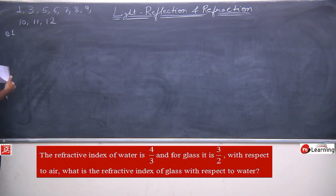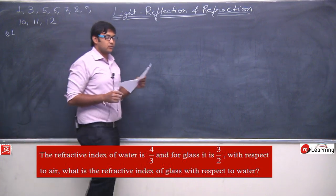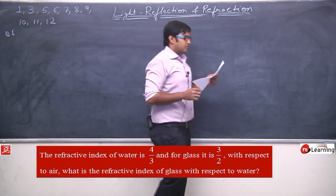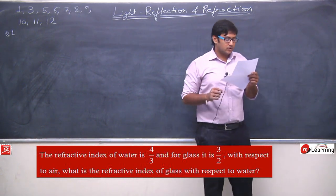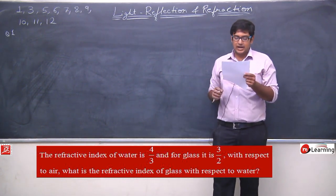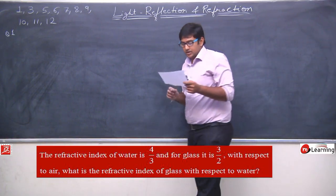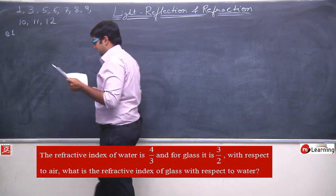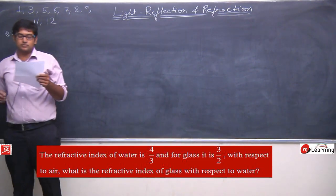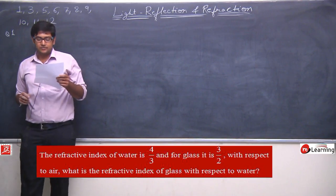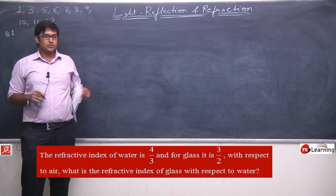Question number 1 says: the refractive index of water is 4/3 and for glass it is 3/2, both with respect to air. What is the refractive index of glass with respect to water?